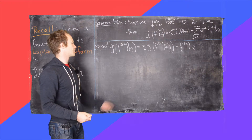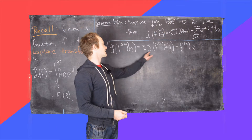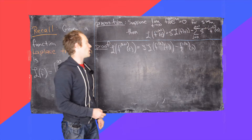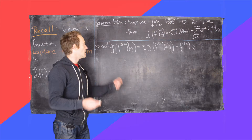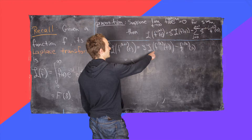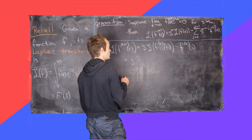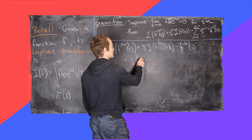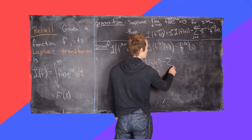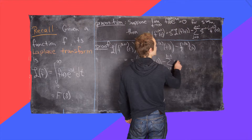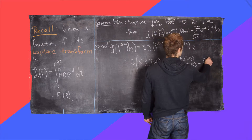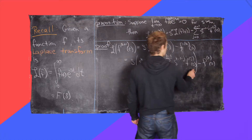We left off with: the Laplace transform of the (k+1)th derivative equals s times the Laplace transform of the kth derivative, minus the kth derivative of f evaluated at 0. Now we apply the induction hypothesis. Since we've assumed the formula is true for the kth derivative, we write s times the Laplace transform of the kth derivative as s times s^k times the Laplace transform of the original function, minus the sum from j equals 0 to k minus 1 of s^(k−1−j) times the jth derivative evaluated at 0, then minus the kth derivative evaluated at 0.